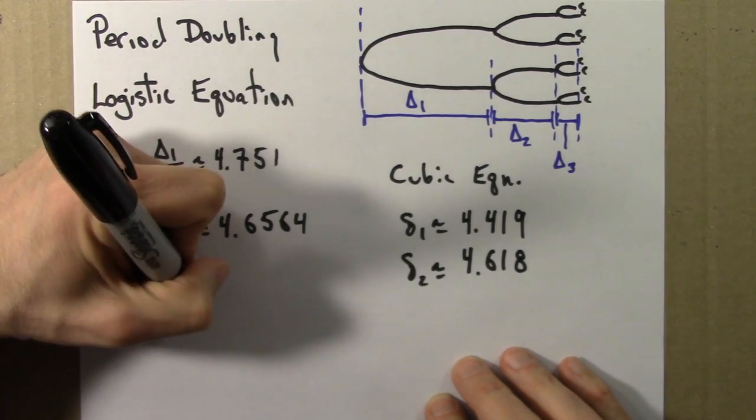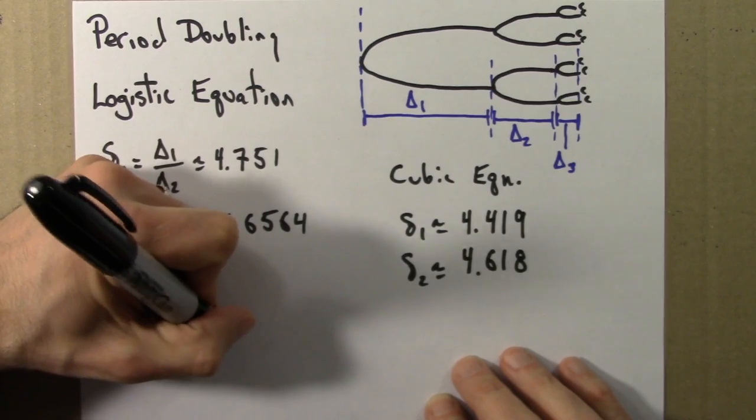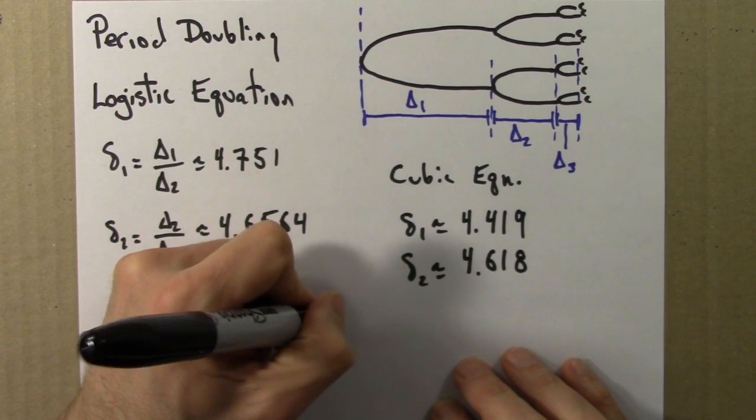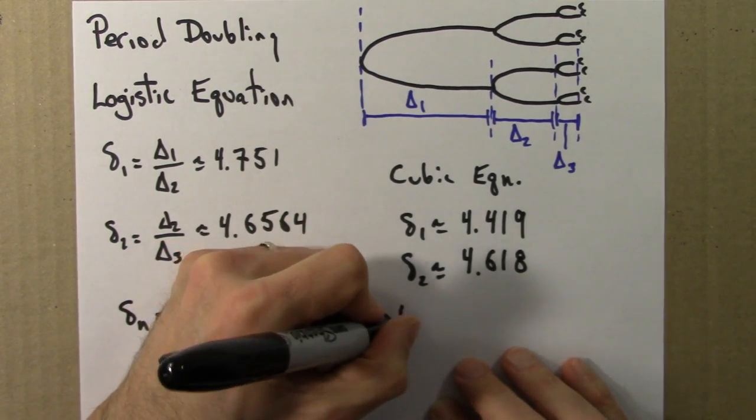We're interested in delta n, which is capital delta n over capital delta n plus 1. And this is going to go to the number 4.669201.